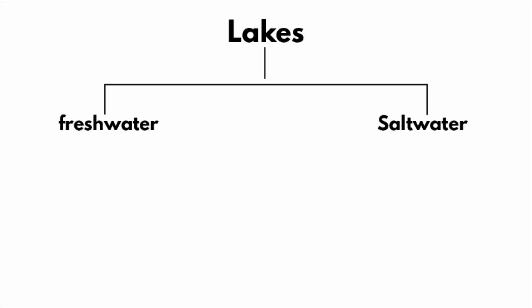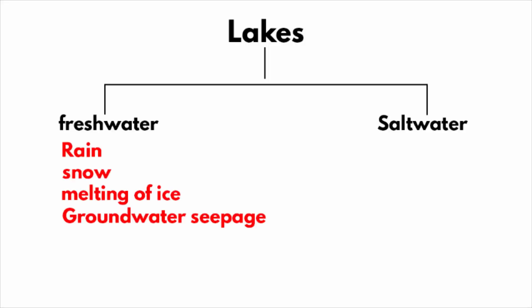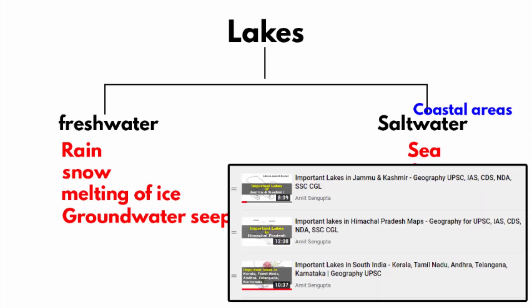Lakes are both freshwater as well as saltwater, but most of them are freshwater. You can figure that out by looking at the water source. Saltwater lakes usually exist near coastal areas.